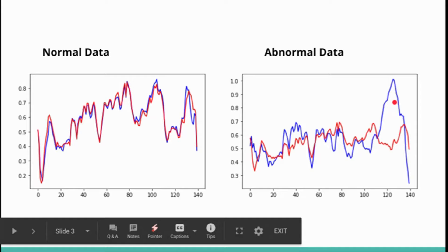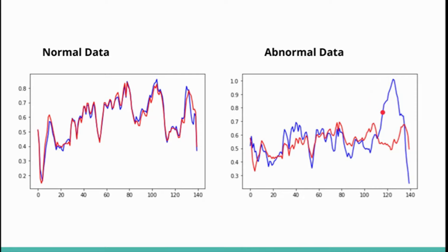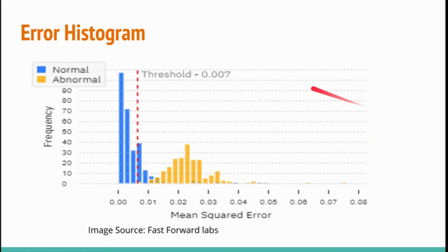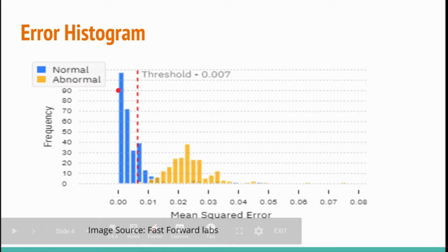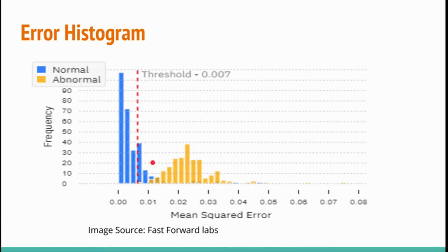You set a threshold on the reconstruction error to identify whether data is normal or an anomaly. Looking at the error distribution, the mean squared error for normal samples is very small, while for abnormal data it is higher. So when training an autoencoder, it effectively separates normal and abnormal classes.